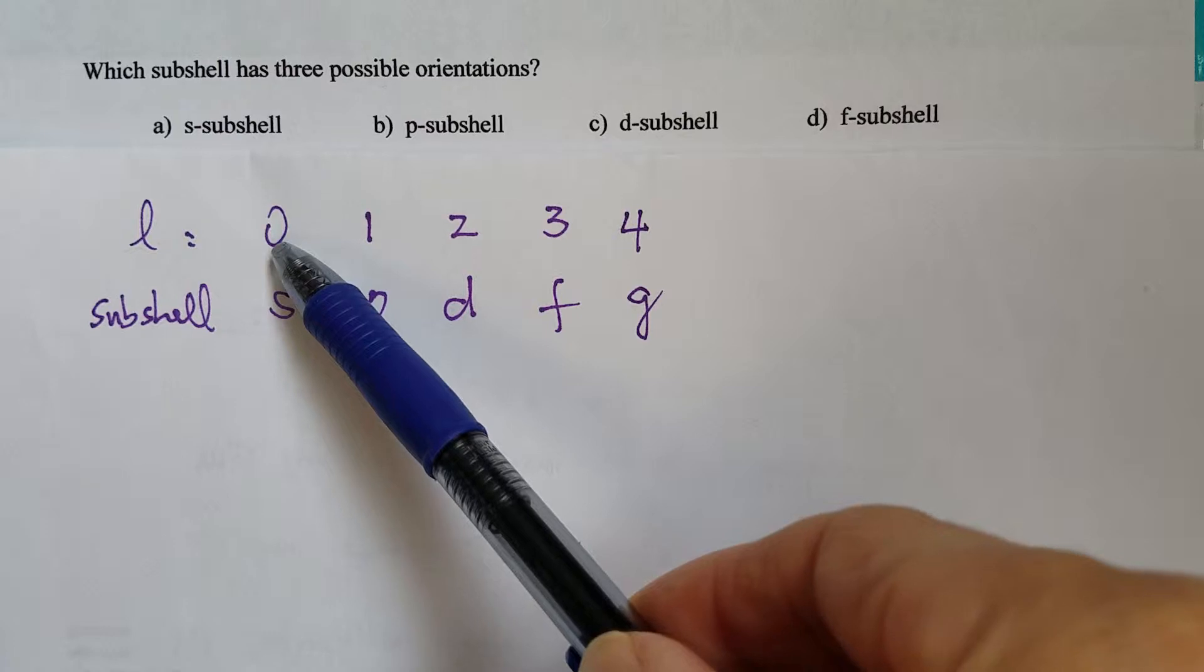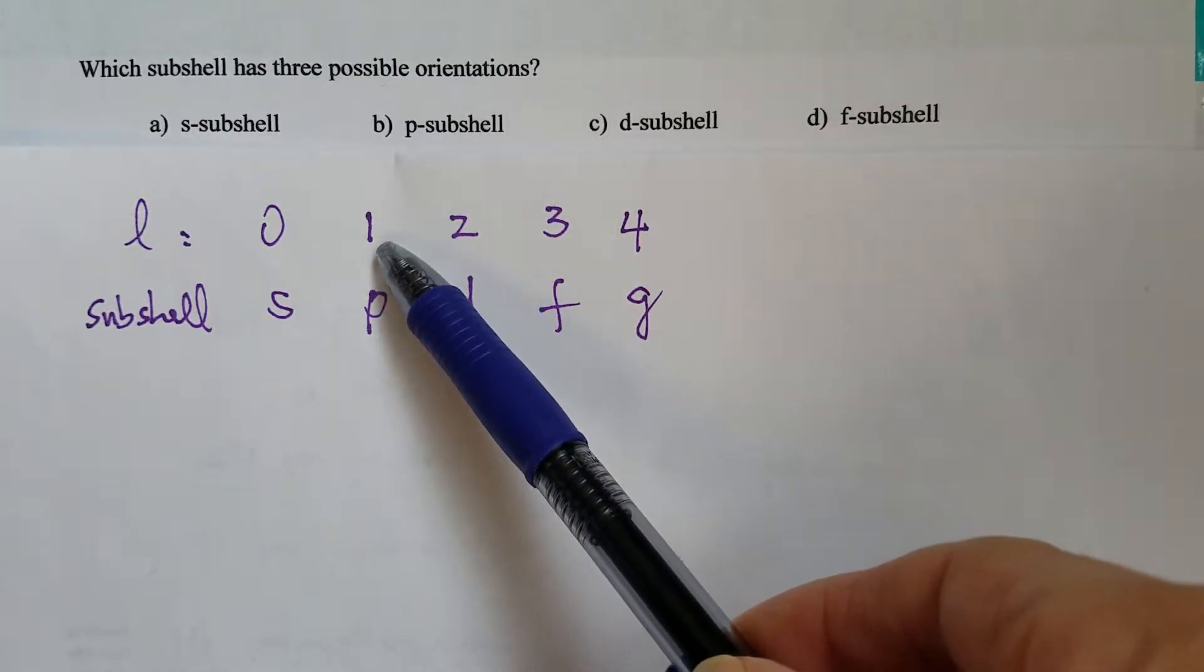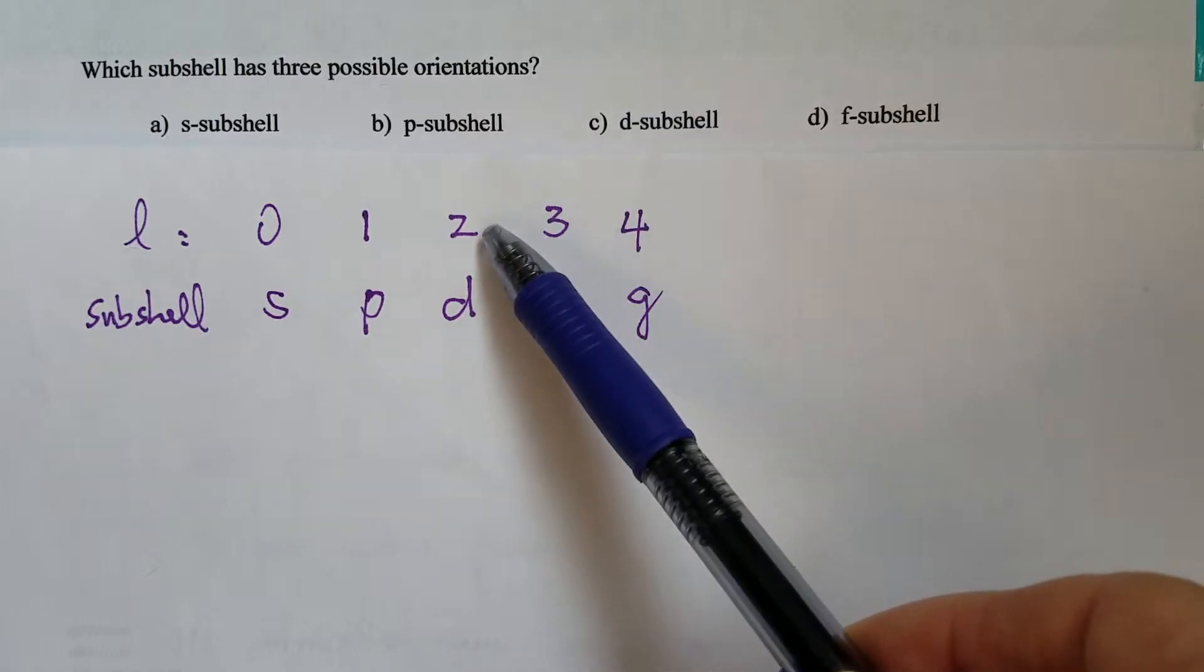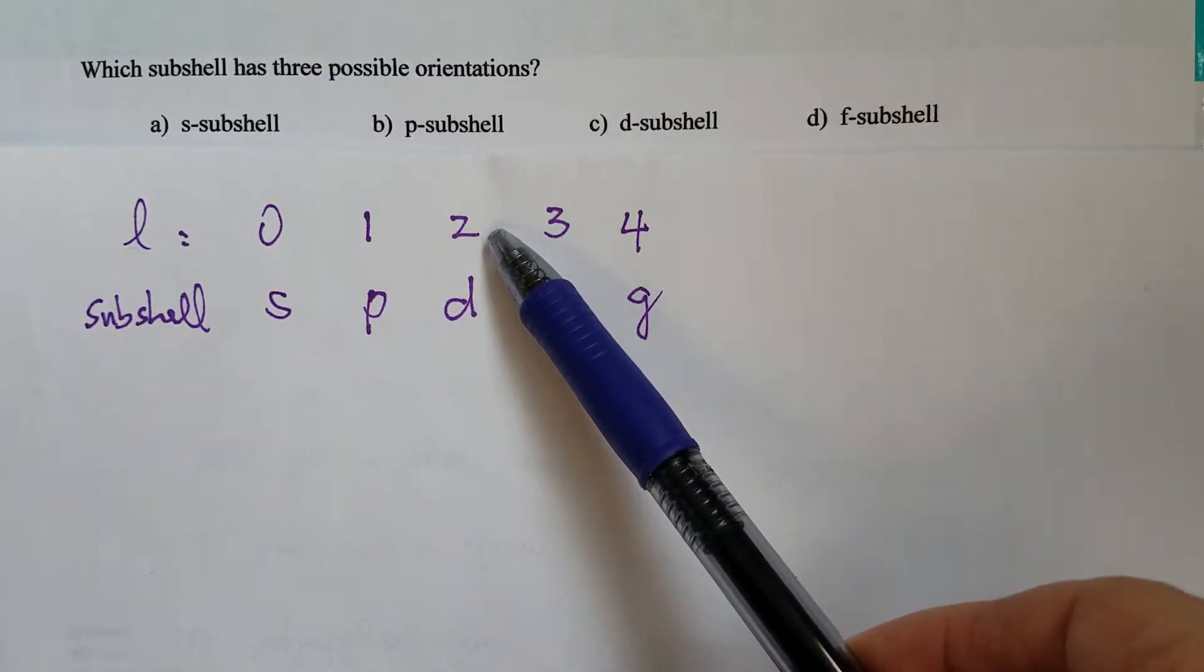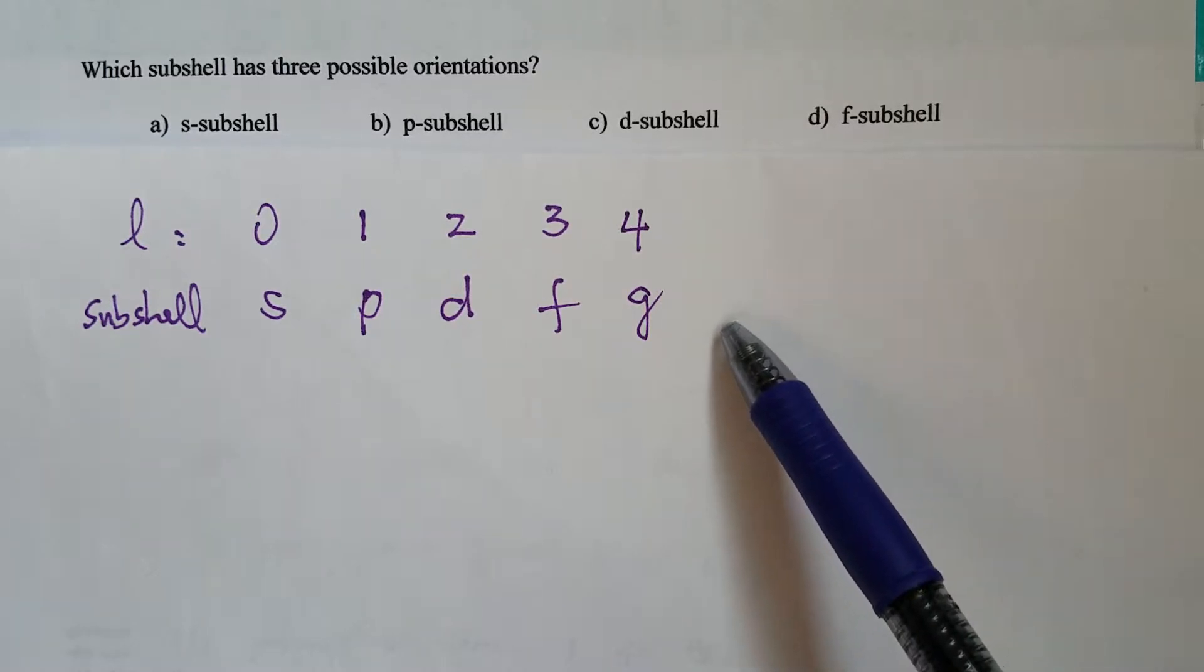So s-subshell means L equals zero, p subshell L equals one, d subshell L equals two, and so on and so forth.